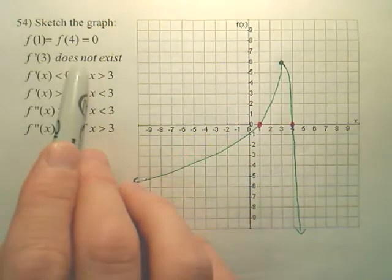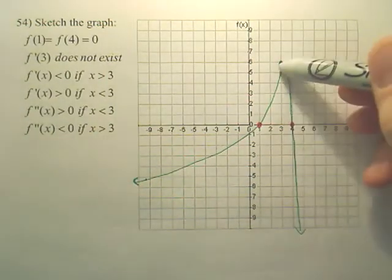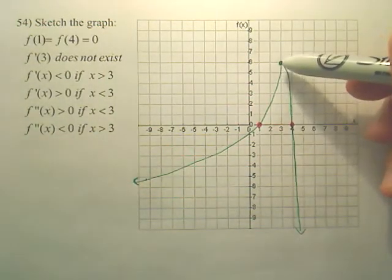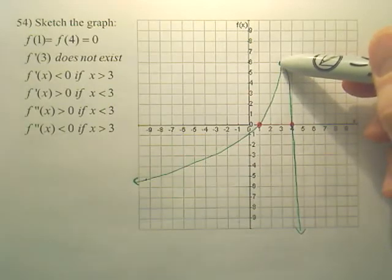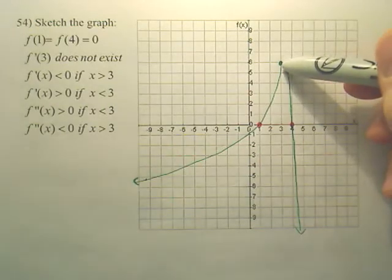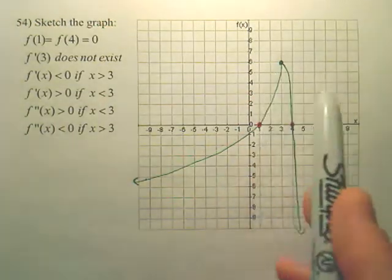The derivative at 3 does not exist. So if you look at my graph here, there's going to be either a point or an asymptote here at 3 because the derivative does not exist here. I just put a point.